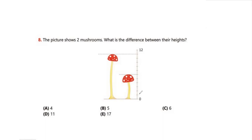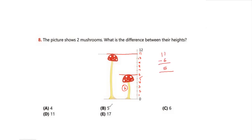Counting the units carefully: 1, 2, 3, 4, 5, 6, 7, 8, 9, 10, 11. The height of the first mushroom is 6, and the height of the second mushroom is 11. The difference between the heights is 11 minus 6, which equals 5. So the answer is 5.